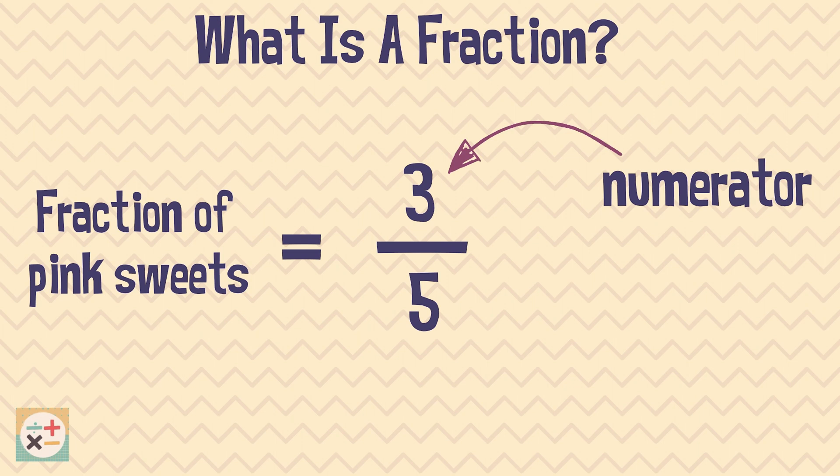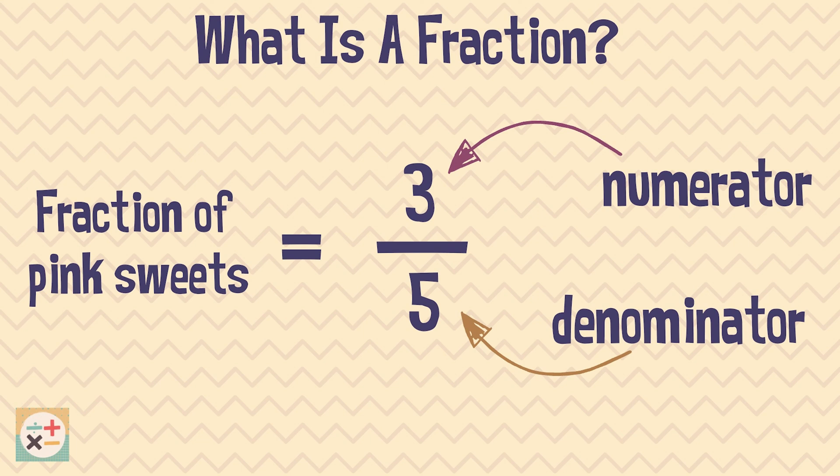The number on bottom of the fraction is called the denominator and shows the total number of parts or objects that there are. In this case, there are five sweets in total.